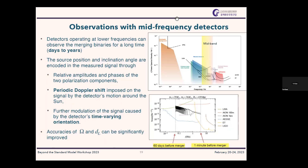During long observations, we can improve localization through several means. The relative amplitude and phases of the two GW polarizations change over time, and with a longer observation period we can use this information to constrain the viewing angle. Periodic Doppler shift also gives more information, because a space-based detector orbiting the Earth or Sun changes its relative motion with respect to the source, and that modulation can be used to constrain the sky direction more accurately.